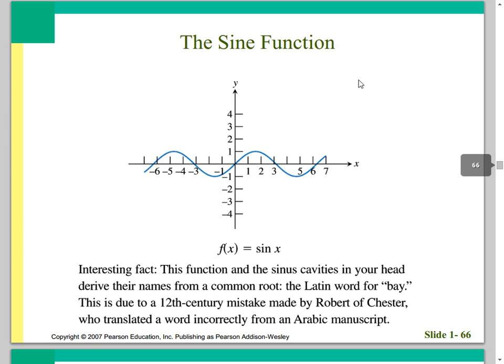The sine function is a trigonometric function. Interestingly, the sine function and the sinus cavities in your head derive their names from a common root — the Latin word for bay — due to a 12th-century mistake by Robert of Chester, who translated the word incorrectly from an Arabic manuscript. We call it a sinusoidal function. It's an oscillating function based on the unit circle, and it's symmetrical about the origin, so it's an odd function.